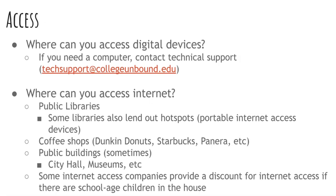It's usually free, or relatively cheap. The first option is public libraries — almost all libraries offer free public Wi-Fi. Many will also lend out hotspots, which are portable internet access devices. You want to check in your area — not just your city, but in the region or county — if any of those libraries are offering portable hotspots and how you can get a hold of one. There are also lots of coffee shops and restaurants that allow you to use their Wi-Fi, like Dunkin' Donuts, Starbucks, and Panera.